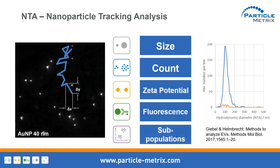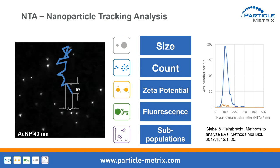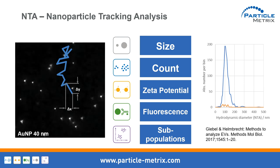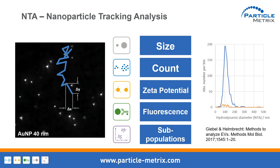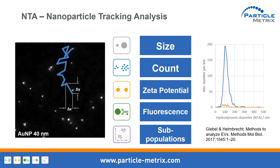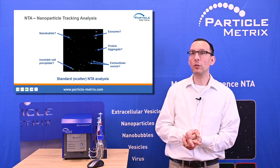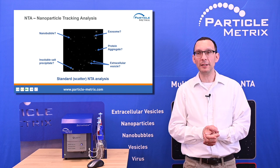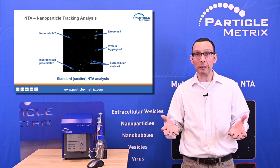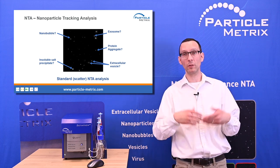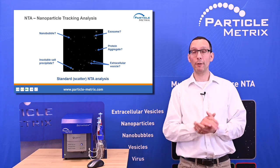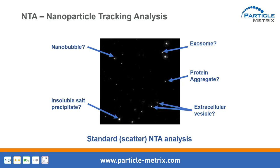We also analyze much more information in the video itself — not only the diffusion properties of the particles, but also how bright they are and the area they occupy. By the help of multivariate statistics such as cluster analysis, we can apply cluster analysis on NTA data. In typical scatter mode, the instrument cannot distinguish whether a particle is a precipitate, a nanobubble, or the analyte you're looking for. Masking particles with antibodies and fluorescent probes gives specific information, which is crucial for biological analysis.